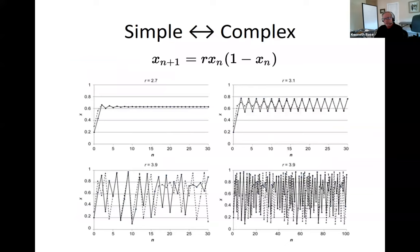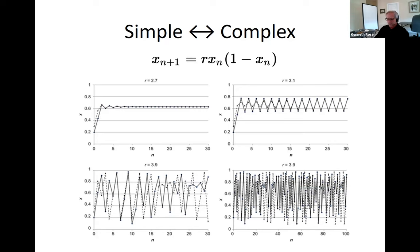There's often confusion between simple models and complex models and their behavior. A very simple model — where X is the number of fish tomorrow as a function of fish today times parameter r — can easily generate quite complicated behavior for different values of r. It doesn't necessarily mean that simple models give you simple results and complex models give you complex results.